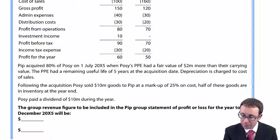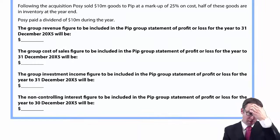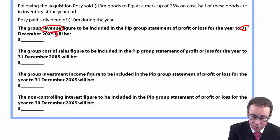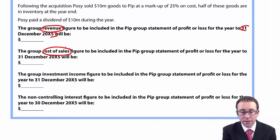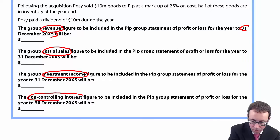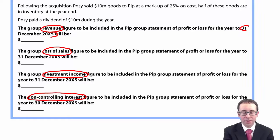So if we scroll down to look at the requirements, four things that you have there. First of all, it wants the group revenue figure for Pip. So Pip must be the parent. And again, the year end there is the 31st of December 20x5. It also wants a cost of sales figure as well. So I mean, that's going to be a bit challenging because you might have PIP adjustments and intra-company sales. It wants the investment income figure to be included. And it also wants a non-controlling interest figure. There's quite a lot to get through there and it's got varying degrees of difficulty as well.